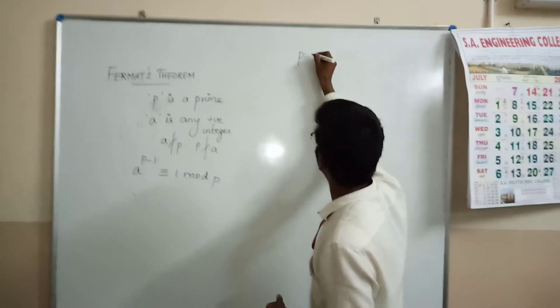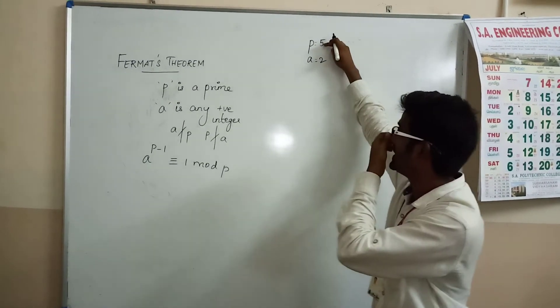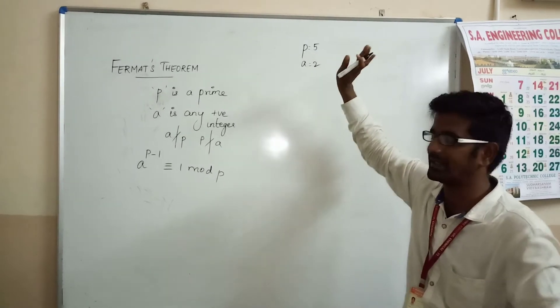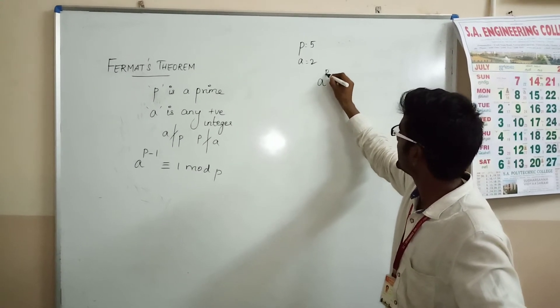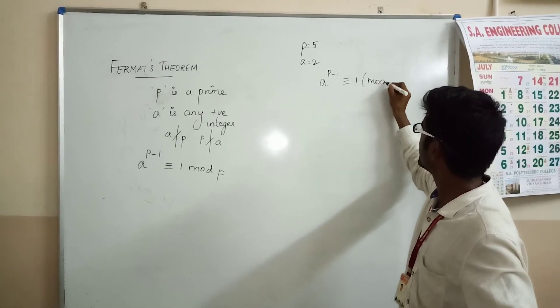if we take p = 5 and a = 2. Obviously p does not divide a, and a does not divide p. So a^(p-1) is congruent to 1 mod p.